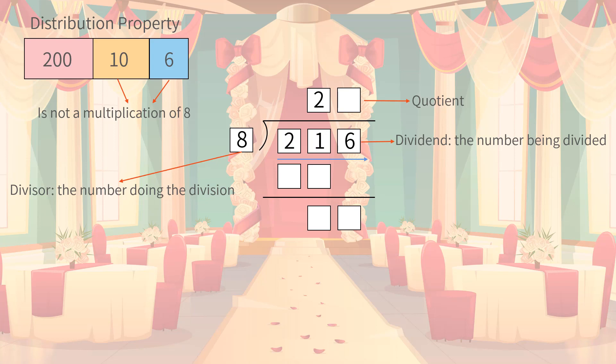We write down the partial quotient that leads to a multiplication smaller than 21 with the divisor, which is 2, on the top of the division symbol, and at the same place value of 1 in 216, as we were only able to do the division after we came to 1. 16 is written to the bottom of 21. After writing down a horizontal line to show the next step, we do subtraction. 21 minus 16 equals 5. So, we bring down 5 and 6 from 216 to the next division.